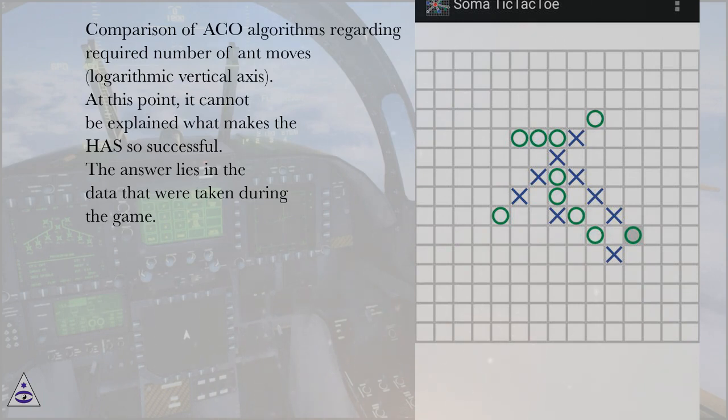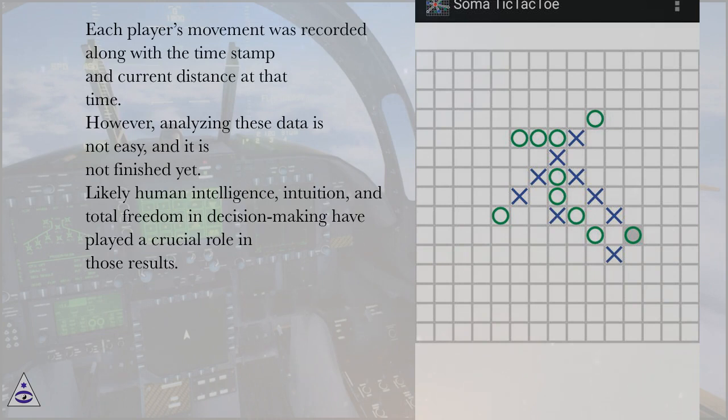At this point, it cannot be explained what makes the HAS so successful. The answer lies in the data that were taken during the game. Each player's movement was recorded along with a timestamp and current distance at that time. However, analyzing these data is not easy, and it is not finished yet. Likely human intelligence, intuition, and total freedom in decision-making have played a crucial role in those results.